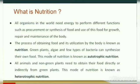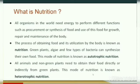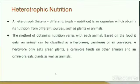Green plants, algae and a few types of bacteria can synthesize their own food. This mode of nutrition is known as autotrophic nutrition. All animals and non-green plants need to obtain their food directly or indirectly from green plants. This mode of nutrition is known as heterotrophic nutrition.